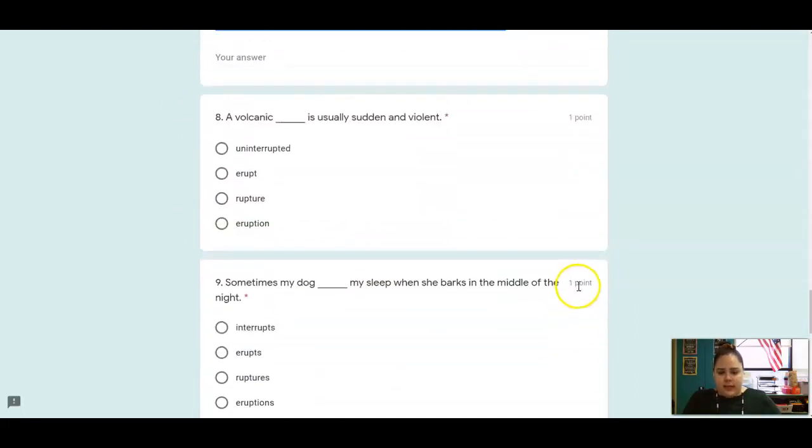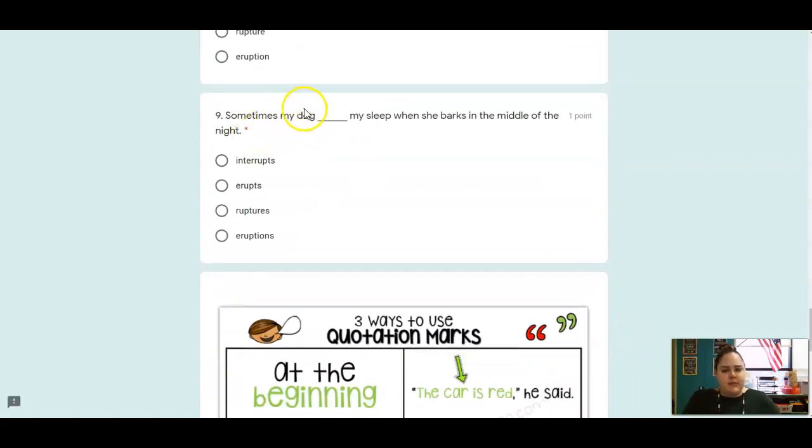Your last couple questions today. I'm going to have you fill in the blank here. A volcanic blank is sudden and violent. Which word makes sense? Sometimes my dog blank my sleep when she barks in the middle of the night.